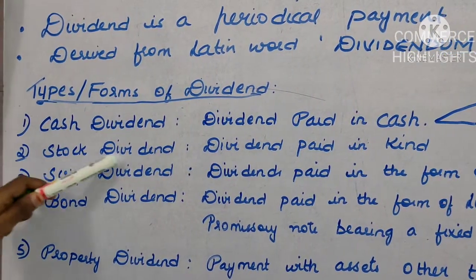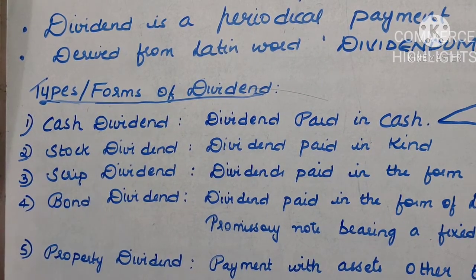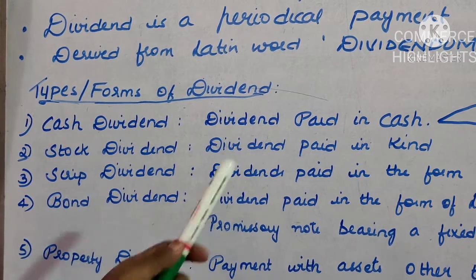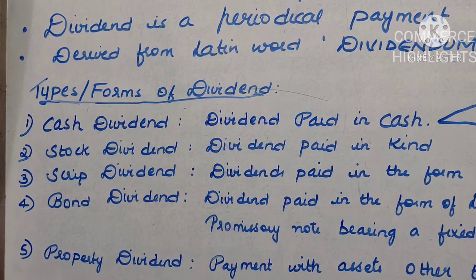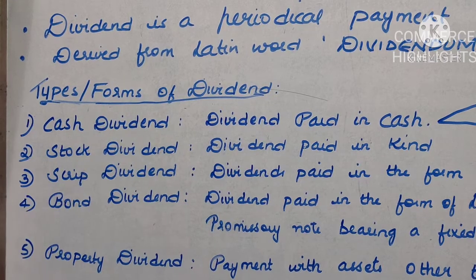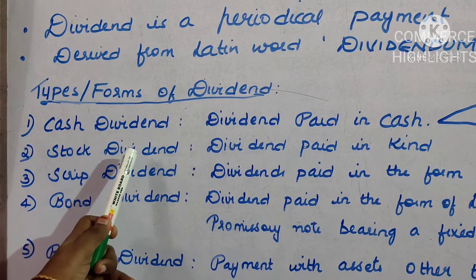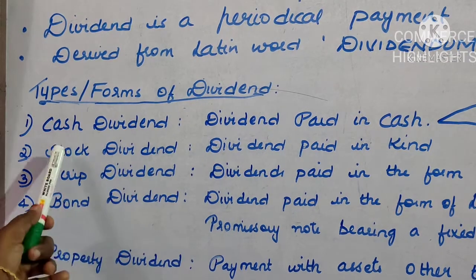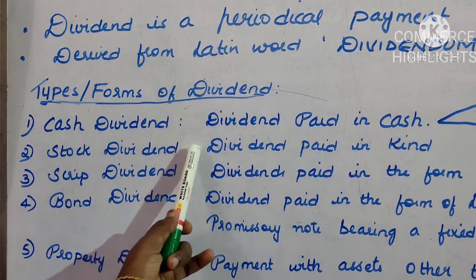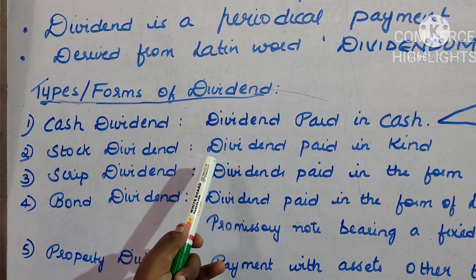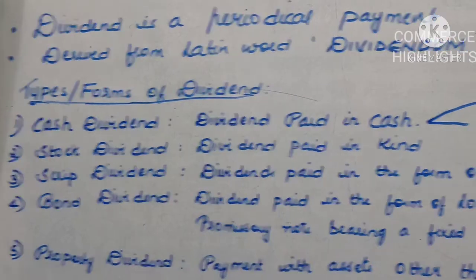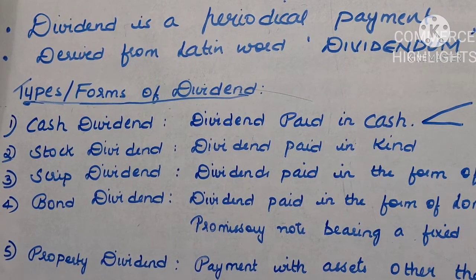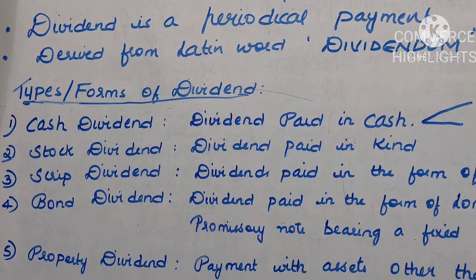Stock dividend is when dividend is paid in the form of stock — that is, if any dividend is paid in kind, in the form of shares, it is termed as stock dividend. This is generally given by a company if it doesn't have earnings or cash. This dividend is given by capitalizing past profits as well as reserves; whatever surplus has been stored is converted into shares and distributed to the shareholders.